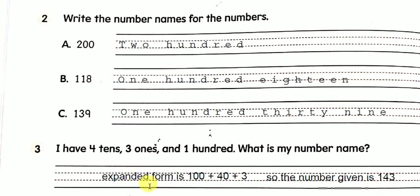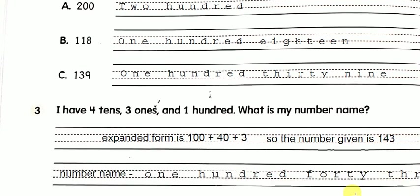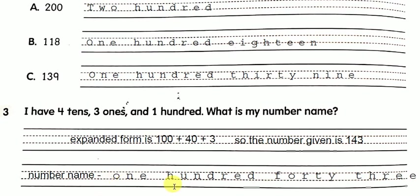Let us write its expanded form. The expanded form will be one hundred plus forty plus three. I wrote forty here — three ones means three. So the number becomes one hundred forty-three. The number name of one hundred forty-three is one hundred forty-three.